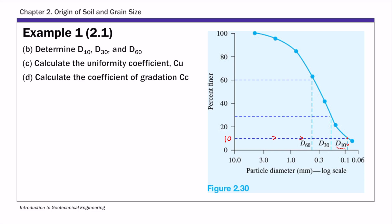And similarly, for d30 and d60, you start from the y-axis. So I start from 30 percent for d30, draw a horizontal line, and get the corresponding x-axis. And then find the corresponding x-axis for d60. That x value is the diameter corresponding to 60 percent.